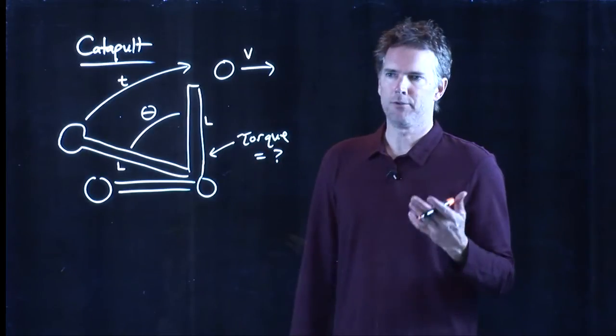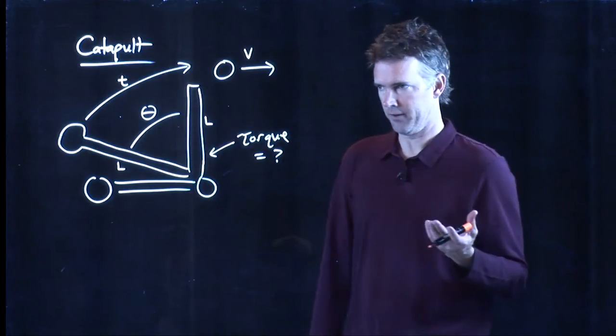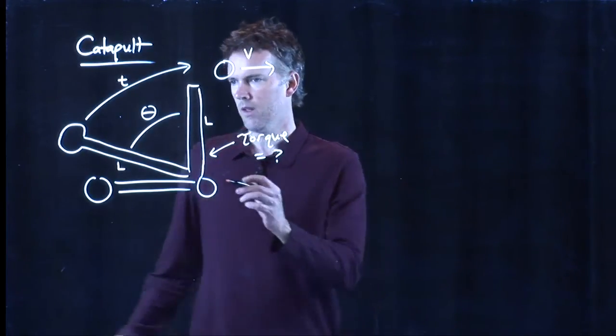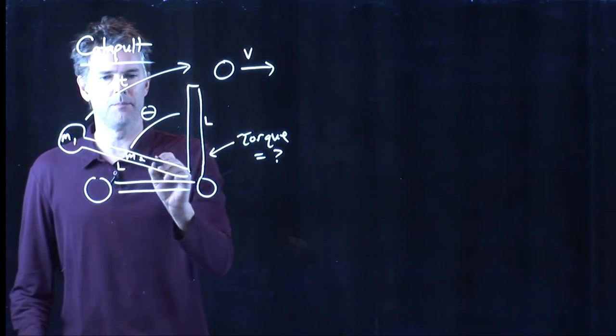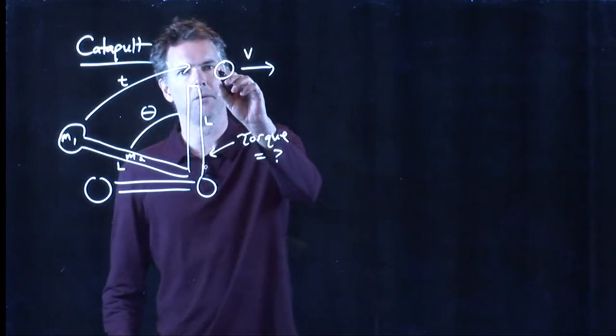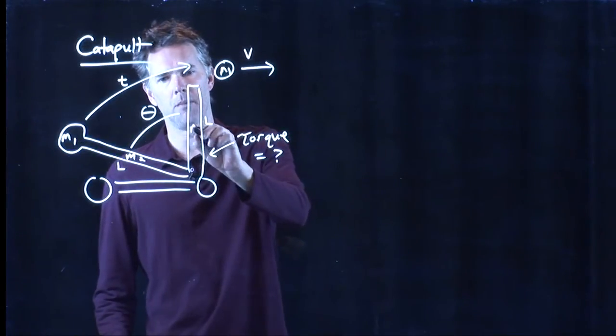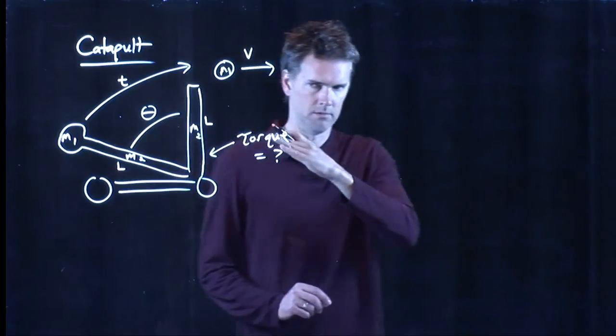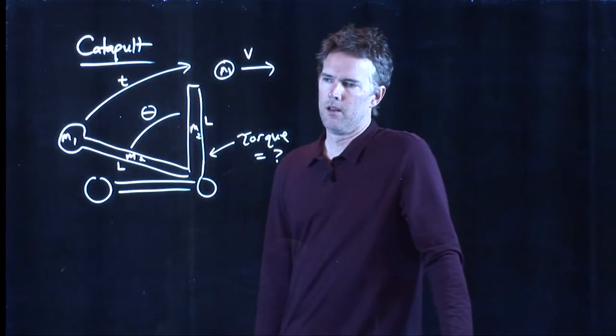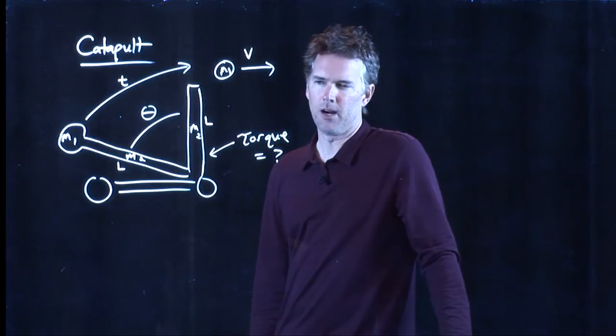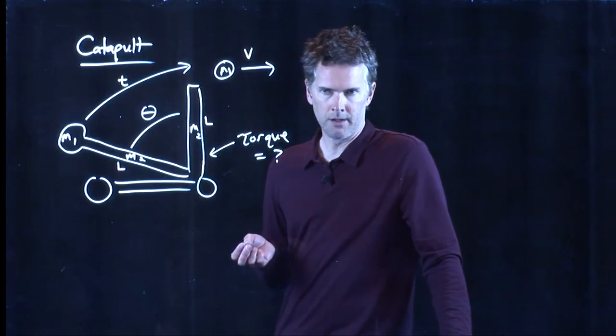Now, we also have to identify some masses involved here. So, this is m1. This is m2. The mass of the ball versus the mass of the pole. Okay. How do we do this? Well, we're looking for torque.